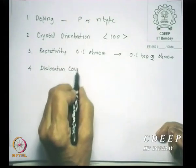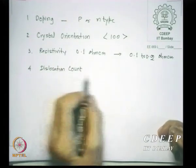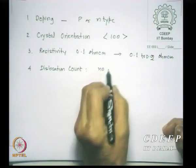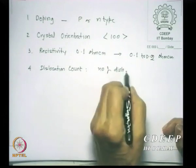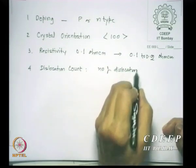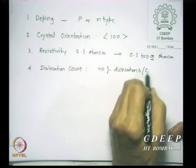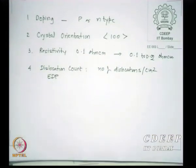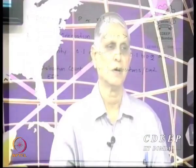They also specify what is called the dislocation count — the number of dislocations per centimeter squared, called EDP. This is very important: larger the number, worse is the wafer. Smaller the dislocation count, better will be the wafer. So one has to see how much EDP or EDC you are looking for before you buy.